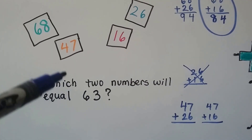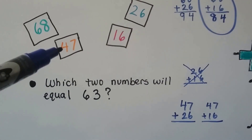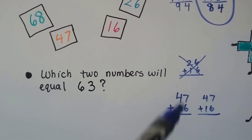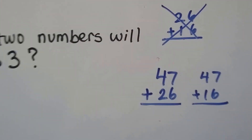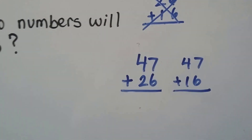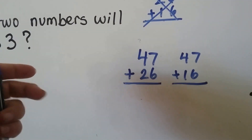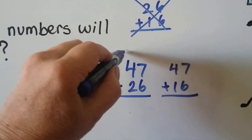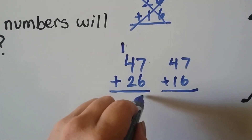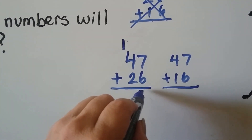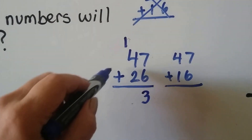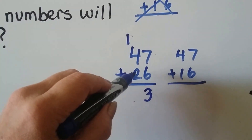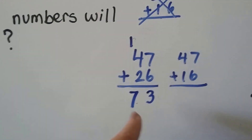We need more tens. So we can try adding the 47 and the 26. 7 plus 6: 7, 8, 9, 10, 11, 12, 13. We regroup the 1 ten into the tens place. We put the 3 in the ones place and we add the tens: 4, 5, 6, 7. Well, that's 73. We only need 63.